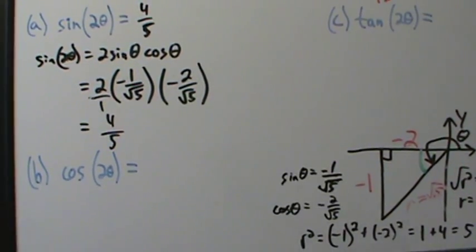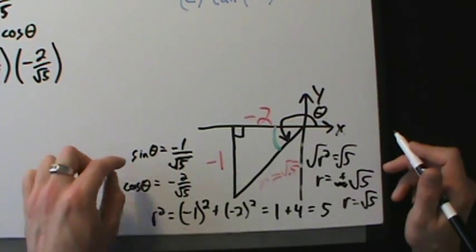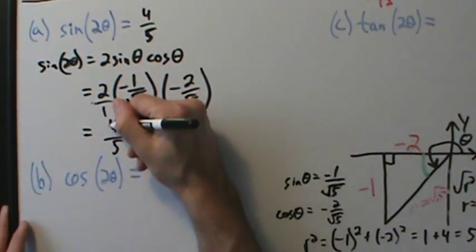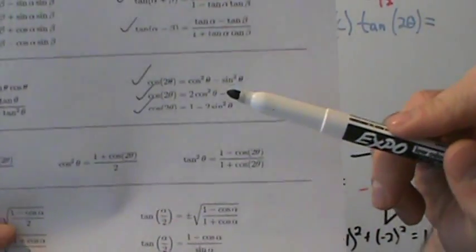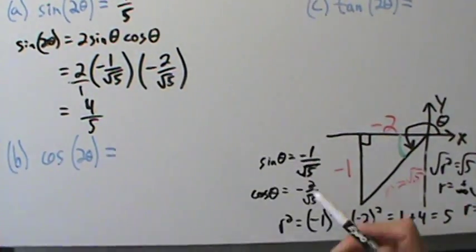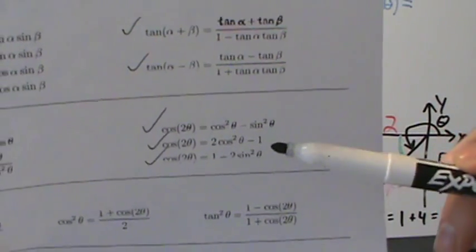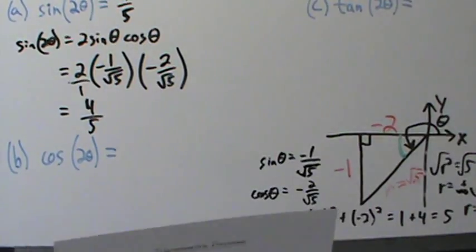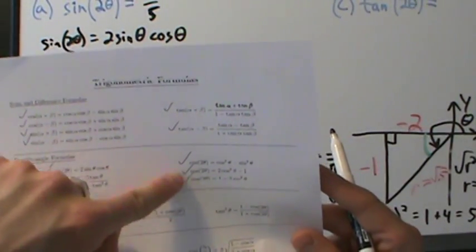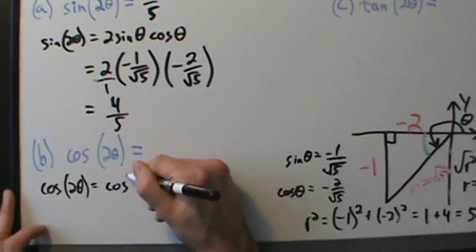For part B, cosine of 2 theta. The hard part is pretty much over — we only had to do the reference triangle once to get sine and cosine of theta. There are three different formulas we could use. Let's use cosine squared theta minus sine squared theta, because both values have root 5 in the denominator, so squaring and subtracting will already give a common denominator with less extra work.